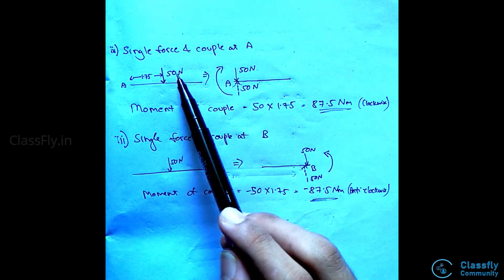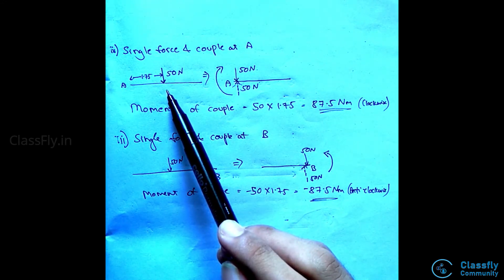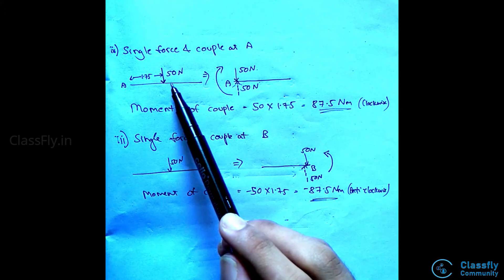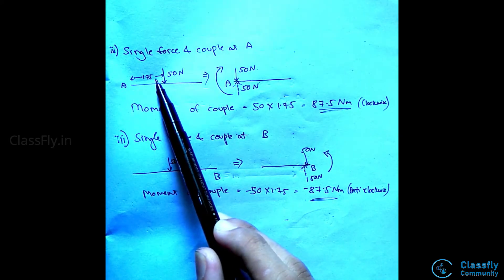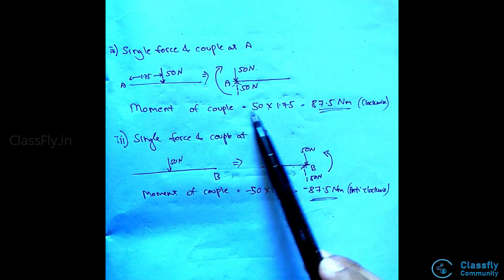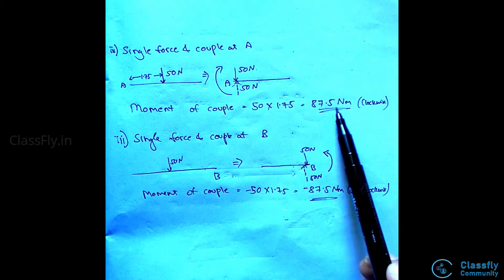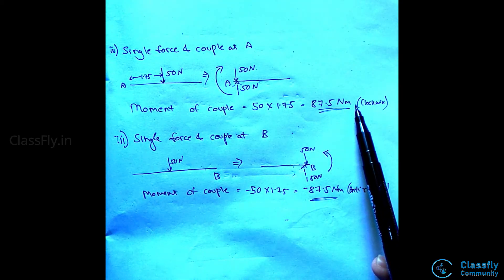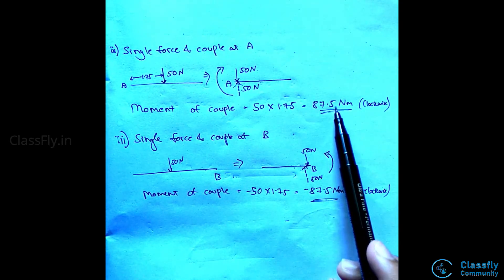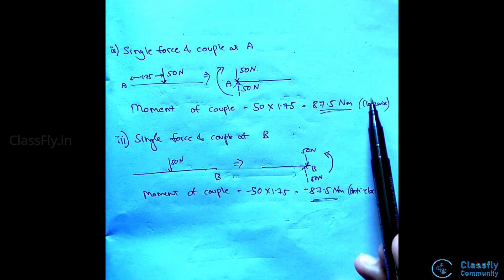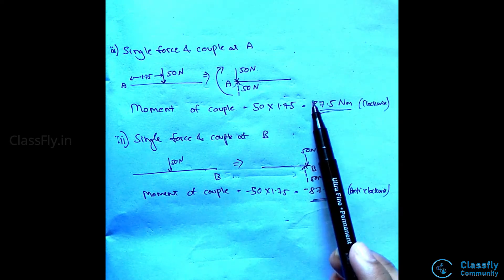The moment of the couple is the product of the force and the perpendicular distance. The force is 50 Newtons and will act at the same point where the resultant acts. Hence, the distance will be 1.75. Therefore, 50 into 1.75 equals 87.5 Newton meters. The moment of the couple at the point will be 87.5 Newton meters in the clockwise direction as the value is positive.